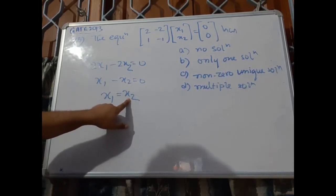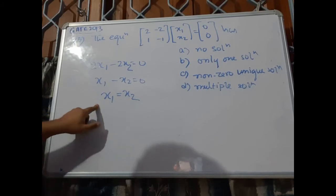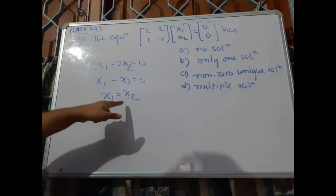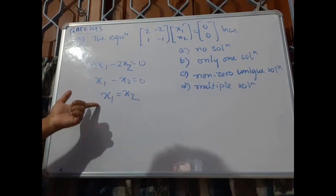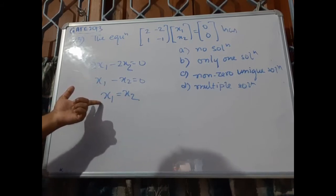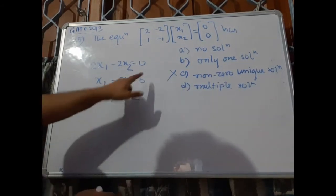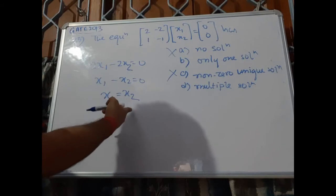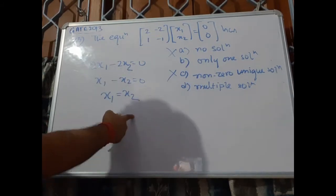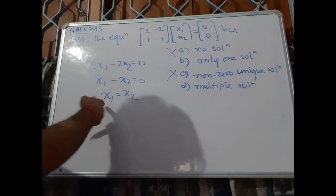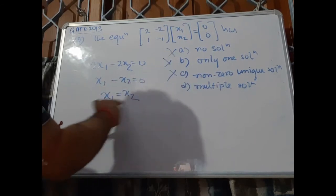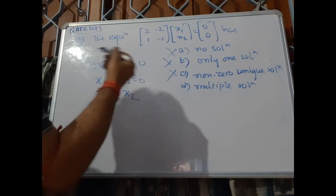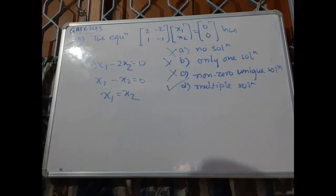For every value of x2, there will be a corresponding x1. x2 can be 0, then x1 will also be 0. So a non-zero unique solution is not possible, no solution is also not possible, and only one solution is not possible either, because for every value of x2 there will be an x1. Therefore, there will be multiple solutions — even infinite solutions. The correct option is multiple solutions.